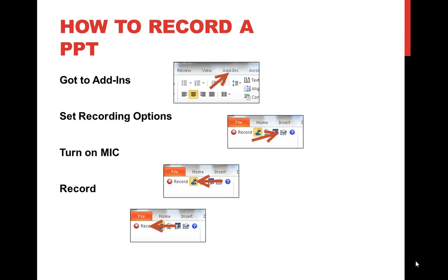So how do you record a PowerPoint? First, go to the add-ins section in PowerPoint. When you click this, it will bring up this little menu here. This button here is to set the recording options. Make sure you choose the right microphone, because you may have three or four listed. Make sure you choose the one that you actually attach to your head.